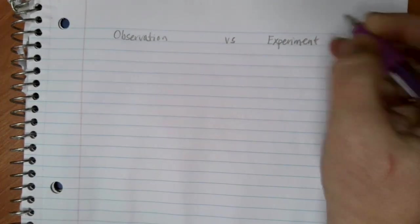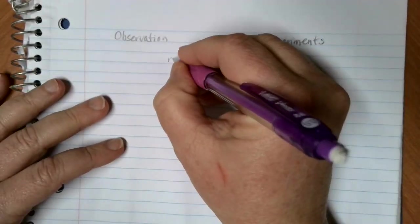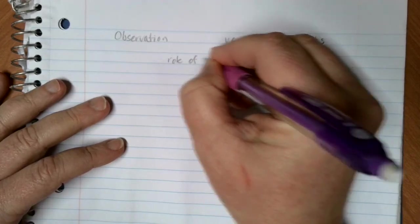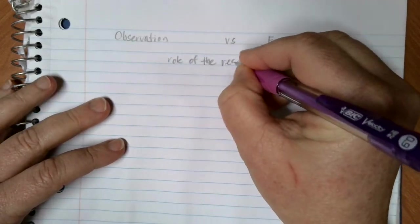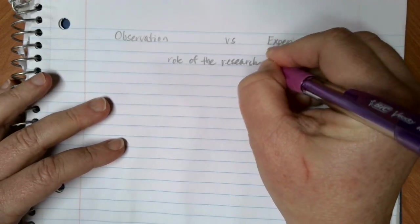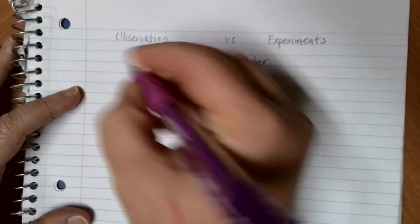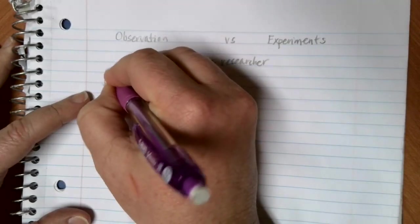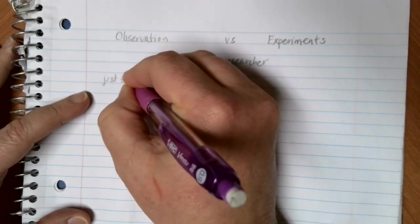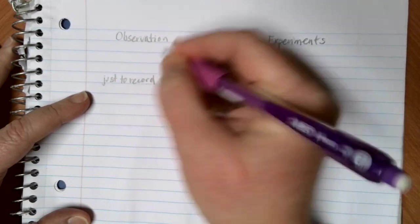The main difference between these two is the role of the researcher. When collecting observational data, the role of the researcher is just to record the results.